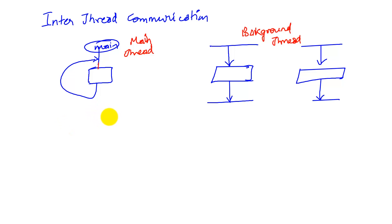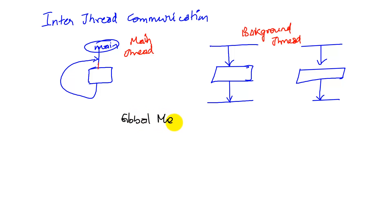The part that is accessible to both the main and the background thread is memory — specifically global memory. Let's see how this will work. We will look at it in three examples.